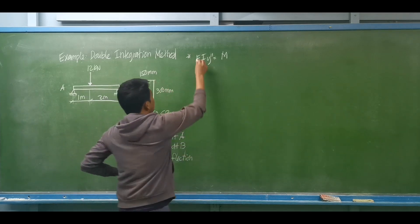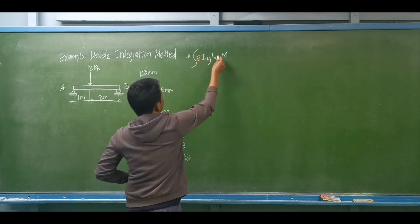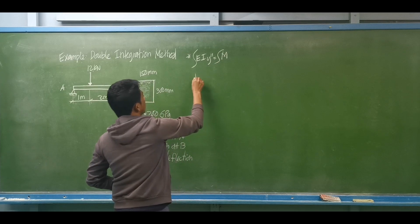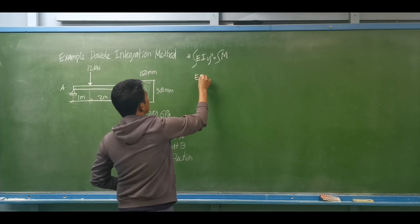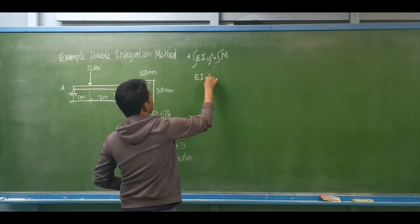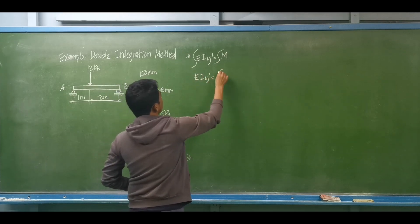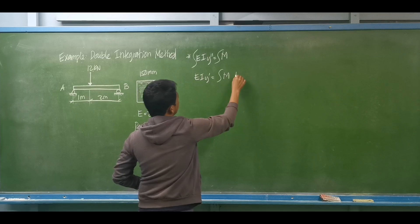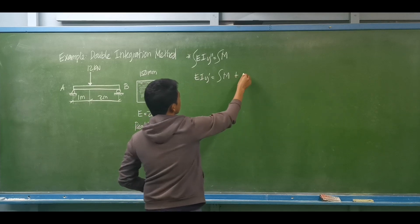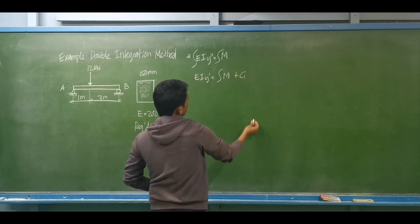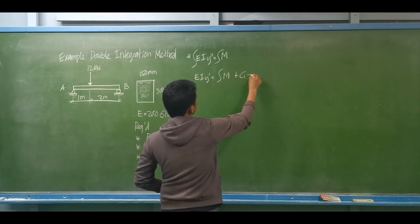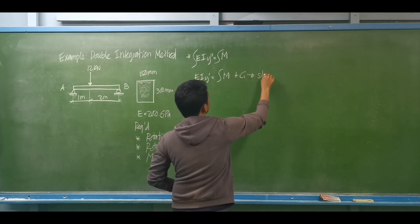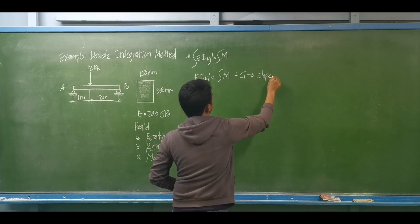If we integrate both sides of the equation, this will give us EI y prime equal to the integral of the moment equation plus the first arbitrary constant C1. This will give us the slope equation.